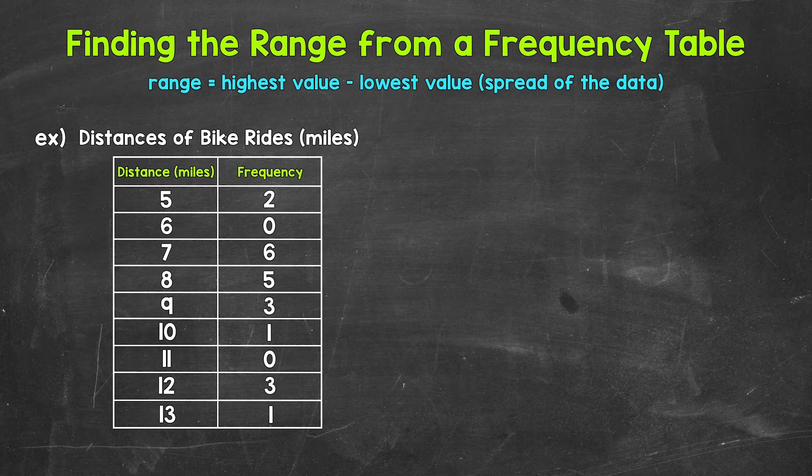All we need to do is find the difference between the highest and lowest value, so the highest value minus the lowest value. Let's jump into our example where we have a frequency table displaying data about bike ride distances.